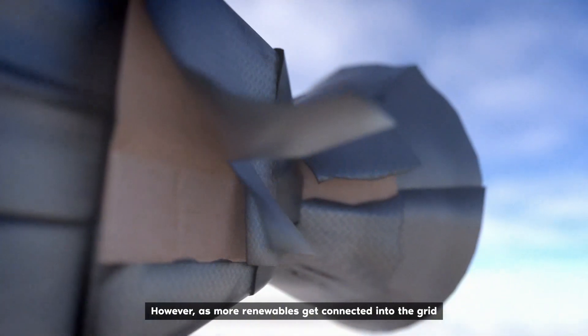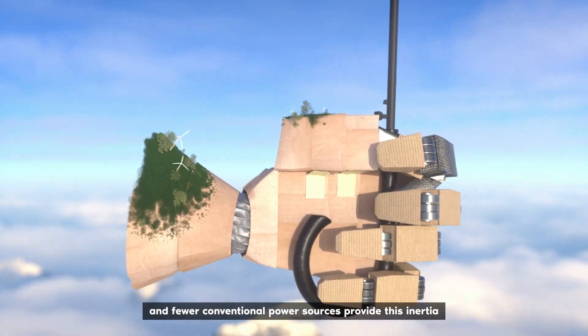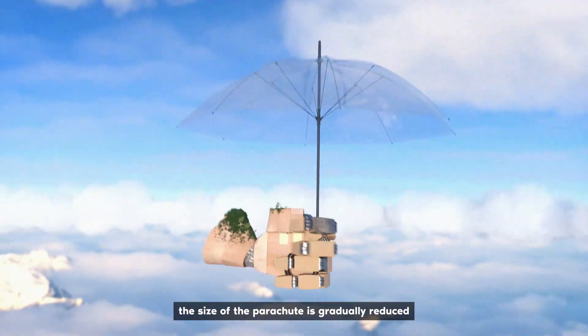However, as more renewables get connected into the grid, and fewer conventional power sources provide this inertia, the size of the parachute is gradually reduced.